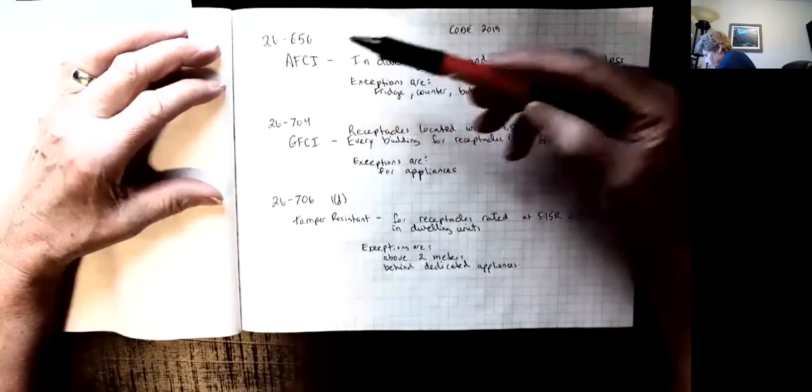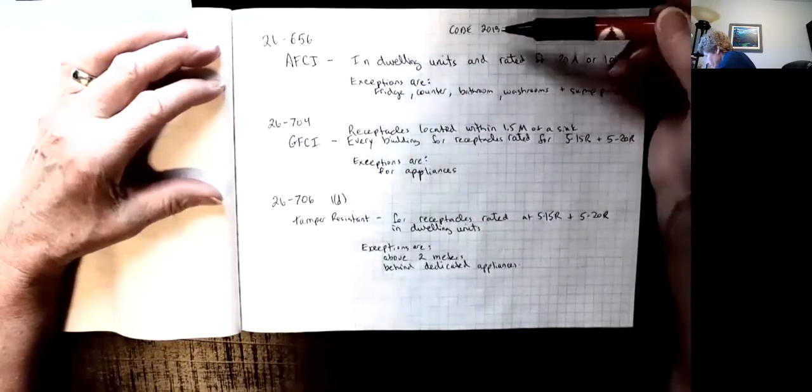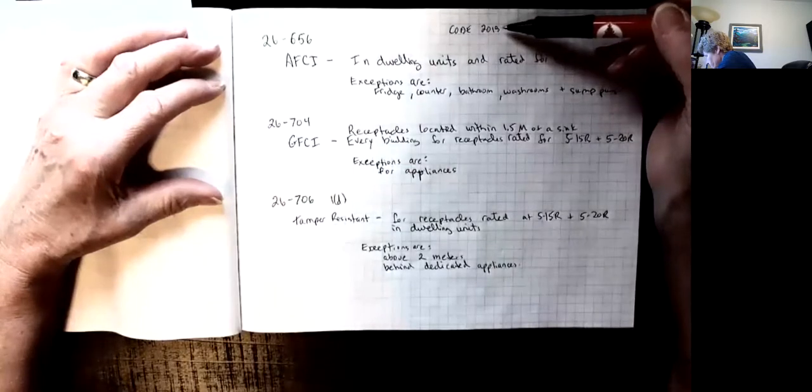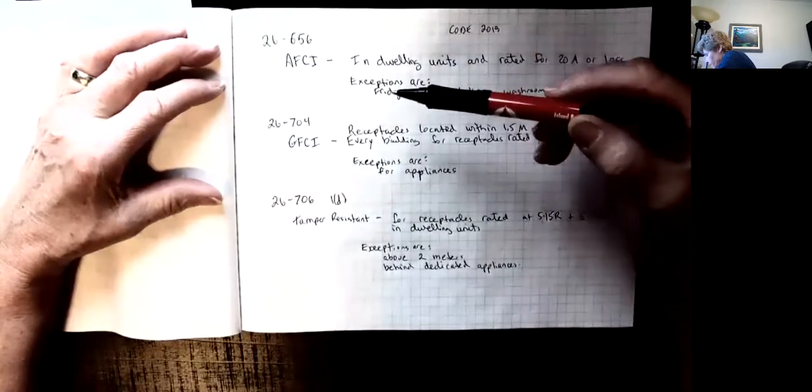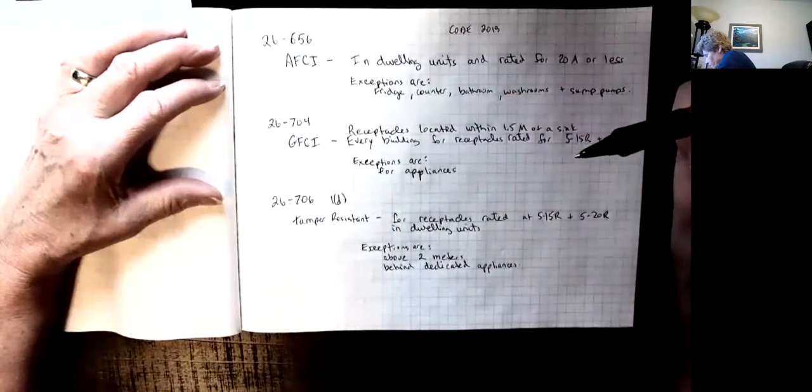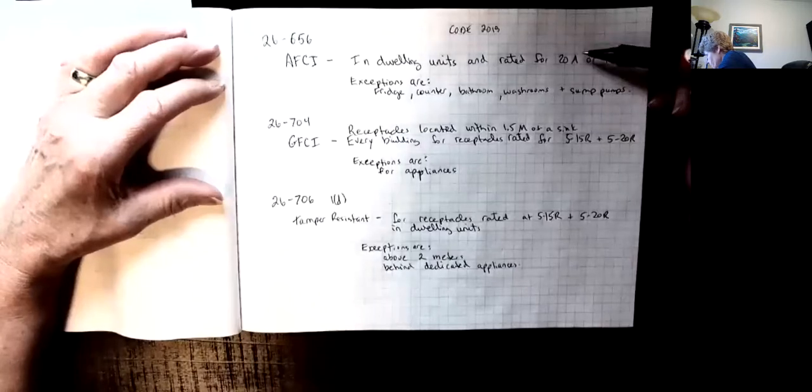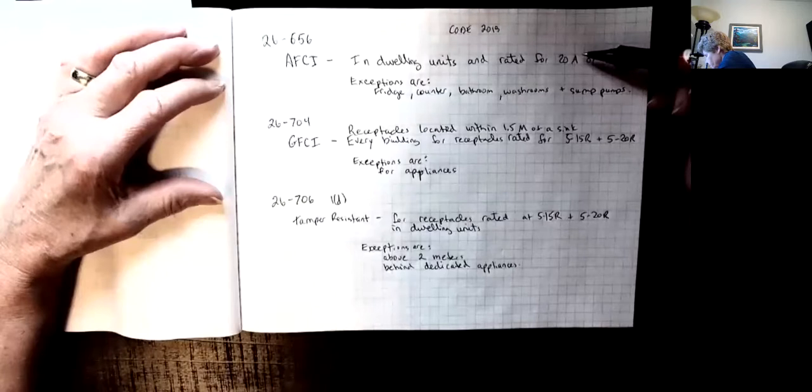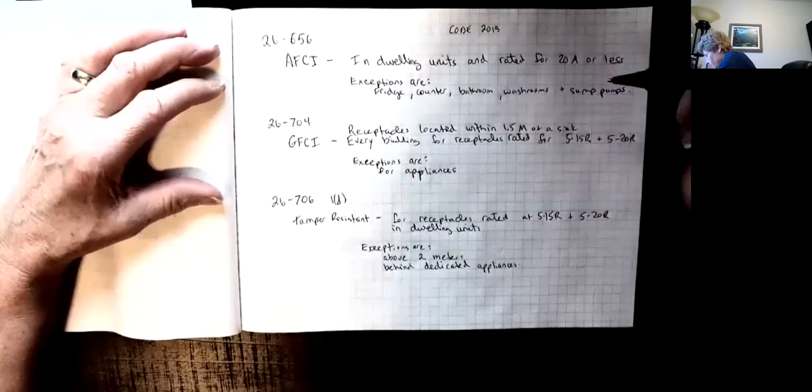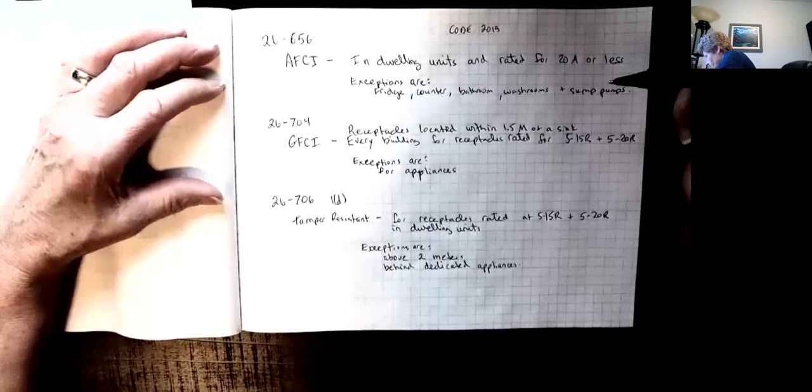One is 26656. Of course this comes out of the Canadian Electrical Code 2018. It's regarding the AFCIs or arc fault circuit interrupters and this applies to receptacles that are rated for 20 amps or less. Every receptacle except for these exceptions have to be protected by an AFCI and the exceptions are the fridge, counter plugs, bathroom or washroom plugs and dosome plugs.